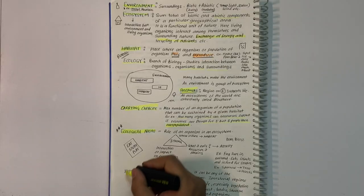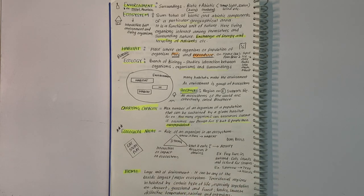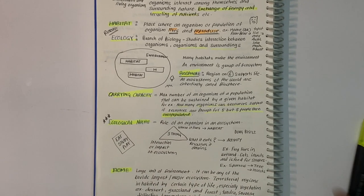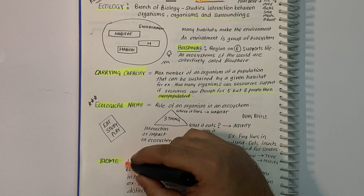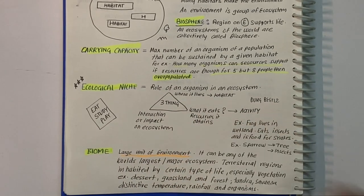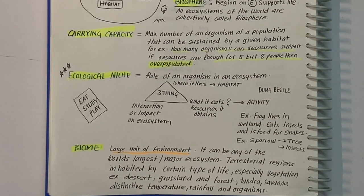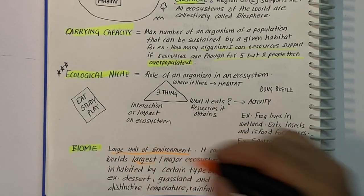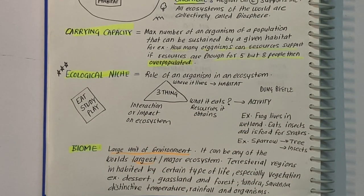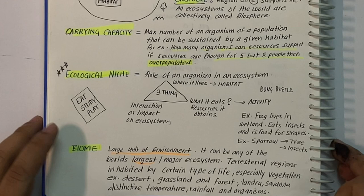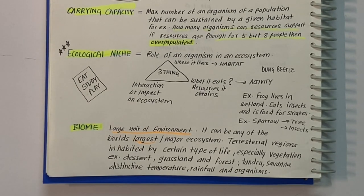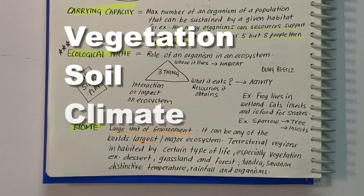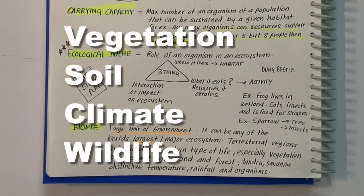A biome is a large community of vegetation and wildlife adopted to a specific climate. Each biome has special characteristics - specific vegetation, soil, climate and wildlife. There are five major types: Aquatic, Grassland, Forest, Desert and Tundra.